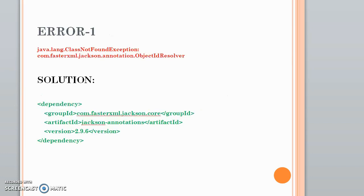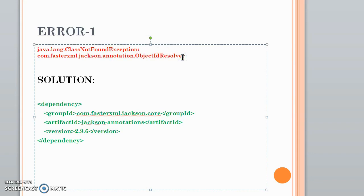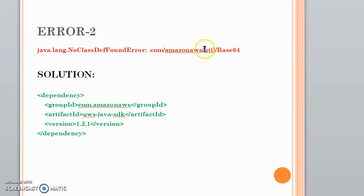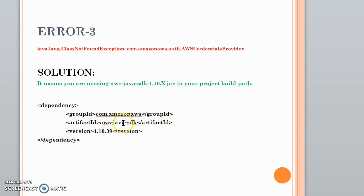These are three common issues I faced — you may not encounter them, but I want to share them in case they help. First, a Jackson annotation object resolver was not found; adding the Maven dependency in the POM file resolved it. Second, a Base64 util class not found error was resolved by adding another Maven dependency. However, adding that dependency caused a version conflict — I had used version 1.2.1, but the AWS Java SDK was expecting a version in the 1.10 series. Some packages are only available in later versions, so make sure you are using the correct version.